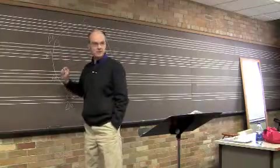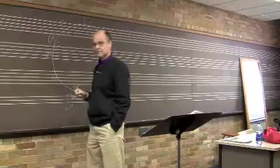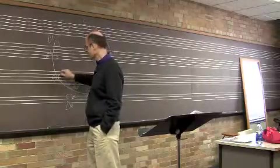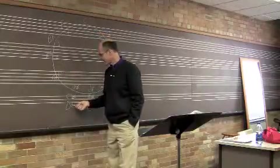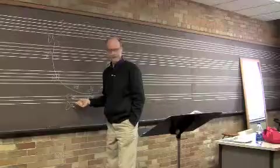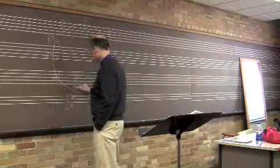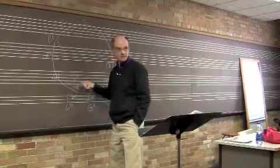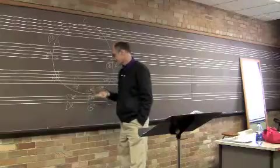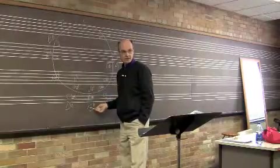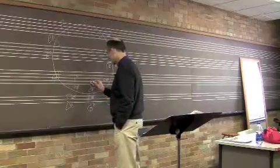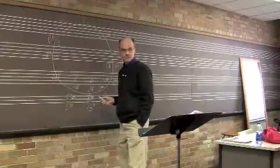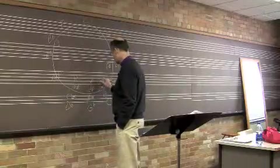And the relative minor of E flat is? C. Relative minor of A flat major? F. Relative minor of D flat major? B flat. Again, enharmonic keys, A sharp and B flat would sound the same, wouldn't they? They'd look different, but they would sound the same. All right. Relative minor of G flat major is? E flat. And the relative minor of C flat major is? A flat minor. Good.